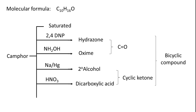Merging these two observations gives the big picture: camphor is a cyclic ketone, which accounts for one unsaturation. Since we need three unsaturations in total, the remaining two can only be accounted for by considering a bicyclic structure in camphor. This is how camphor's preliminary structural framework was elucidated.